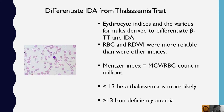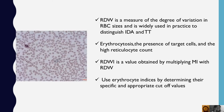The MCV divided by RBC count in millions — Mentzer index — if it is less than 13, beta-thalassemia is more likely; more than 13 suggests iron-deficiency anemia. RDW, red cell distribution width, is a measure of the degree of variation in RBC sizes and is widely used in practice to distinguish IDA from thalassemia trait.